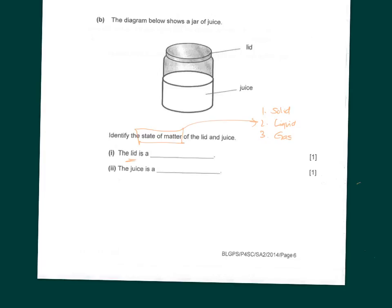The lead is obviously in a solid state — it has a definite volume and a definite shape. Juice is a liquid because it has a definite volume but an indefinite shape.